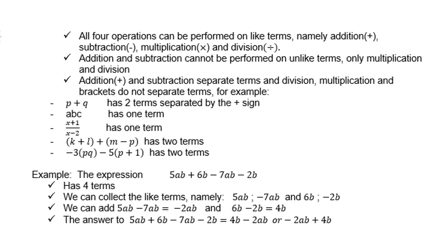(x+1) over (x-2) has one term, because the division line does not separate them. (k+l)+(m-p) has two terms, because each bracket is a term on its own. Negative 3pq minus 5(p+1) has two terms, because negative 3pq is one term, negative 5 into (p+1) is another term.